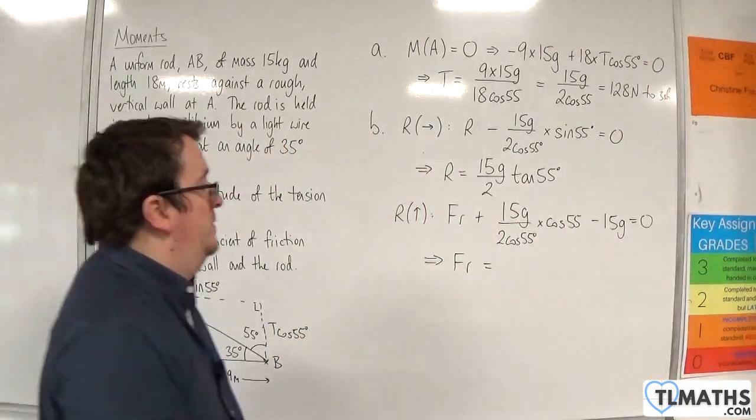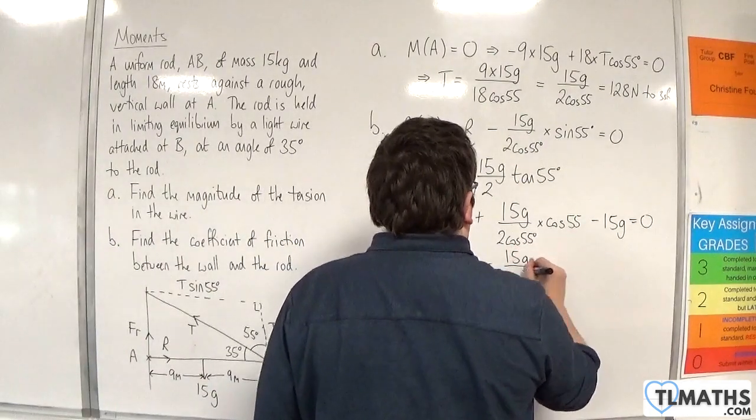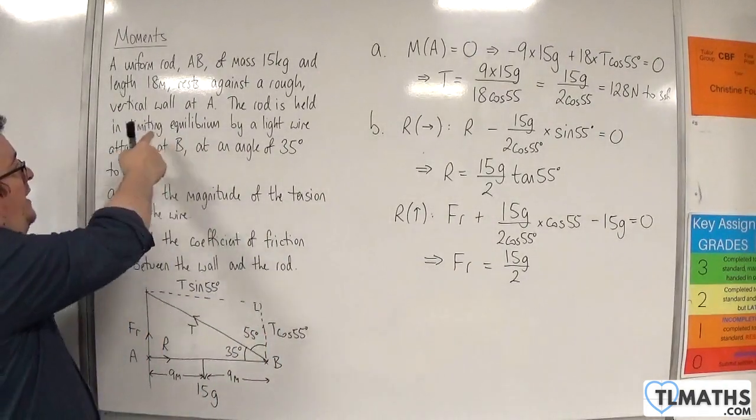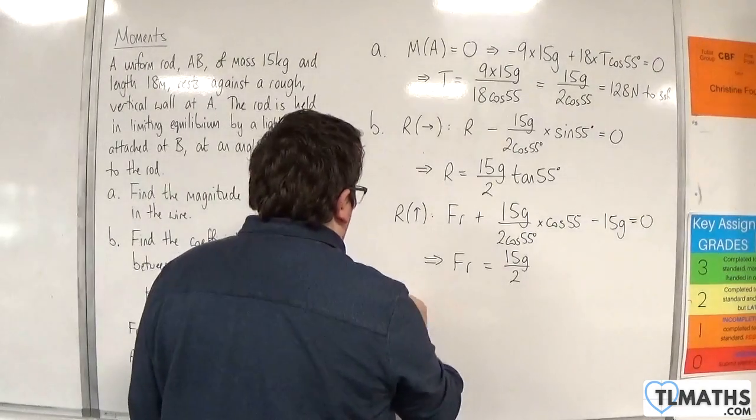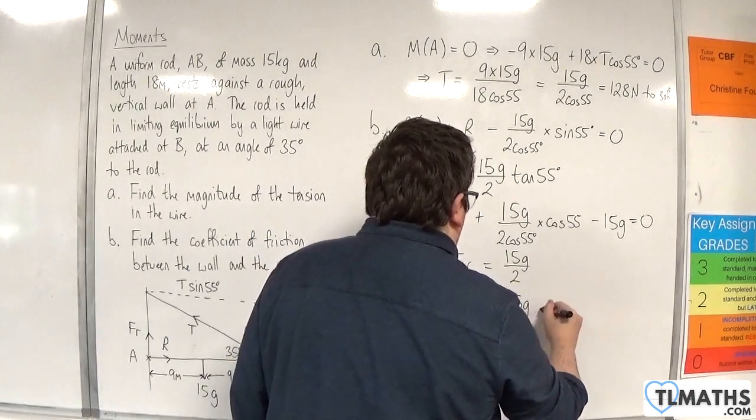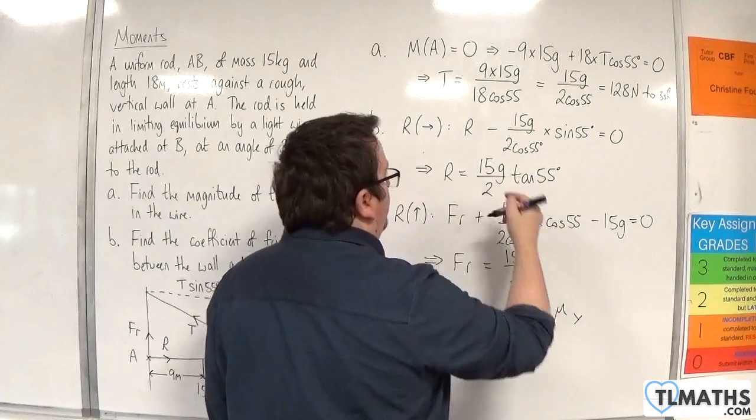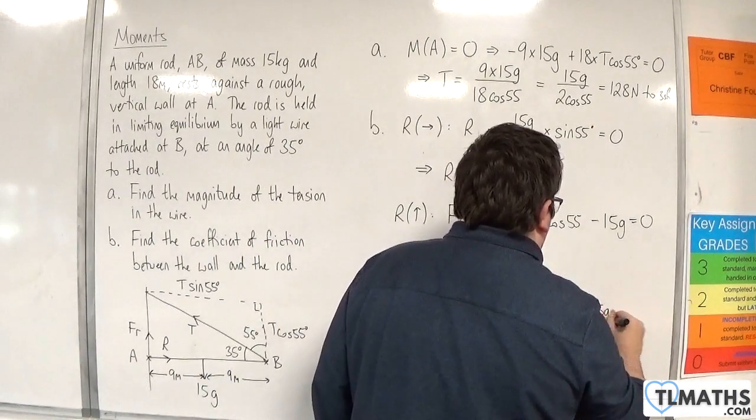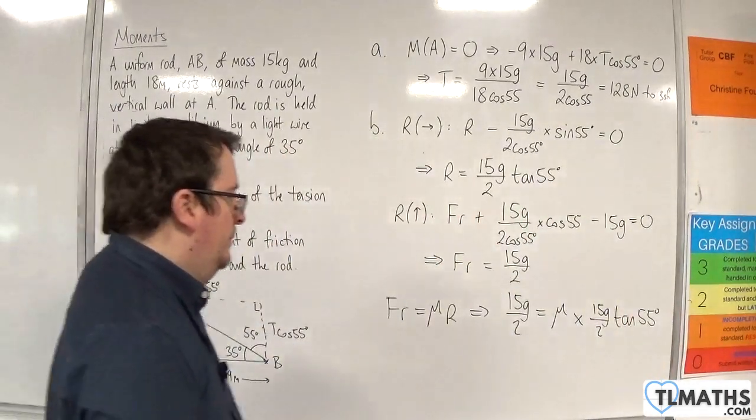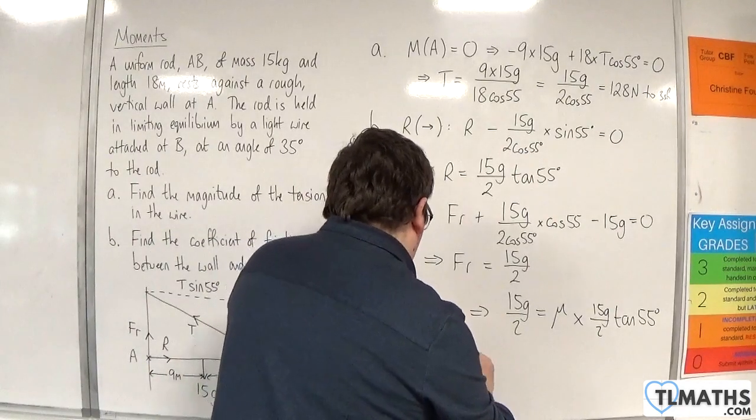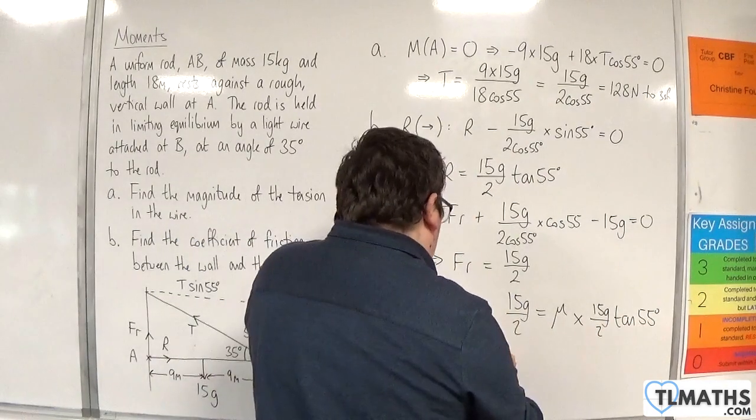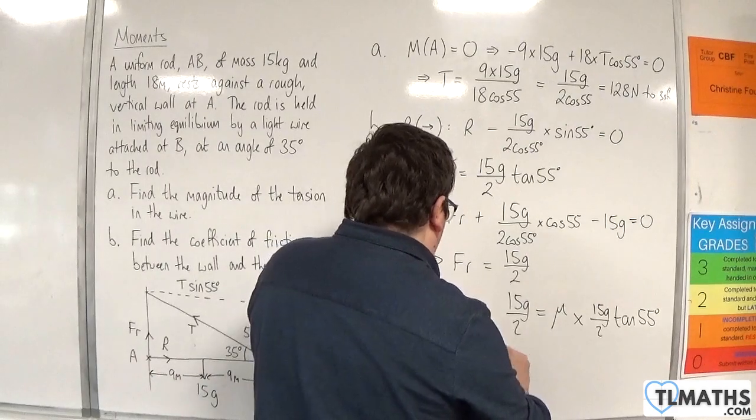Now, the cosine 55s will cancel. And I'll be left with 15g over 2, take away 15g, so that's minus 15g over 2. So friction must be 15g over 2. It's in limiting equilibrium, so the friction must be equal to mu times 15g over 2 tan of 55.